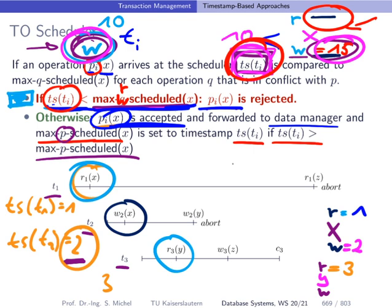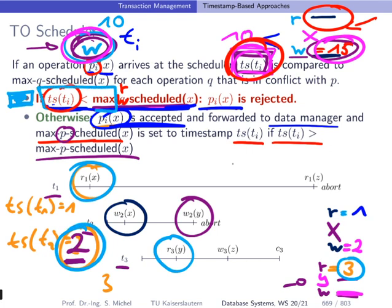Next, T2 wants to write to Y. Since write conflicts with both read and write, we compare timestamp 2 to the stored values for Y. Max W scheduled is empty — no problem there. But comparing to max R scheduled, which is 3, we see that timestamp 2 is strictly smaller than 3. This first condition kicks in: the write operation is rejected, and transaction T2 is aborted.